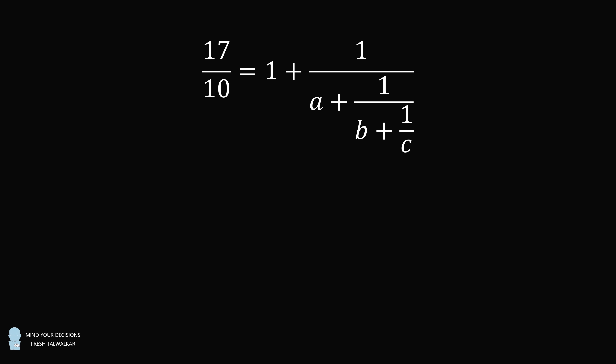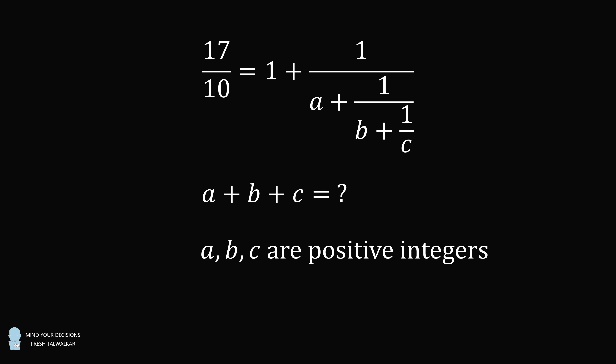Hey, this is Prashanth Walker. The fraction 17 over 10 is written in the form 1 plus 1 over a plus 1 over b plus 1 over c. What is the value of a plus b plus c, where a, b, and c are positive integers, that is, whole numbers greater than zero?